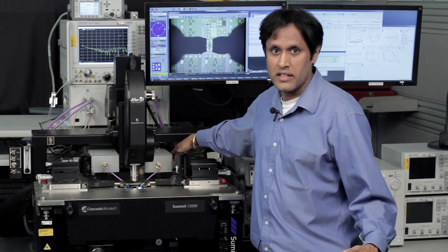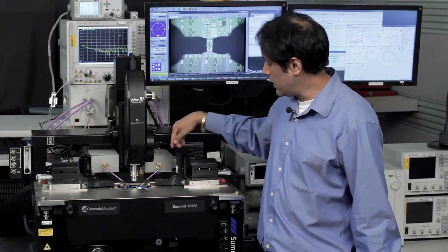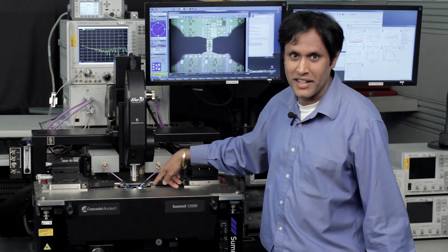So built into these is the bias T, and then we have the coaxial cable, which then connects to these infinity probes by Cascade.